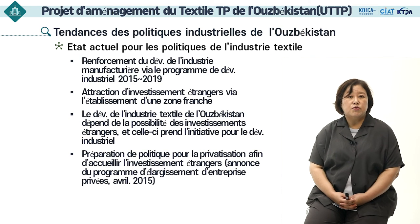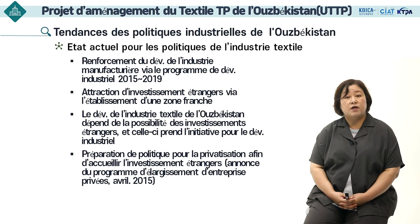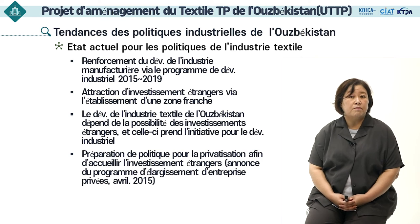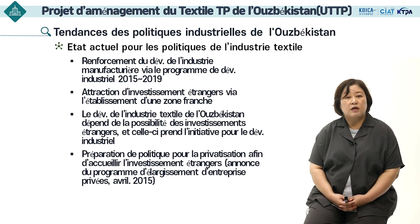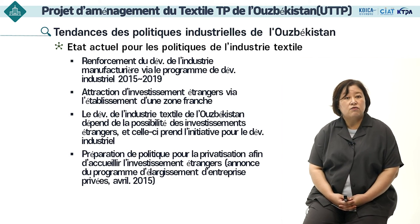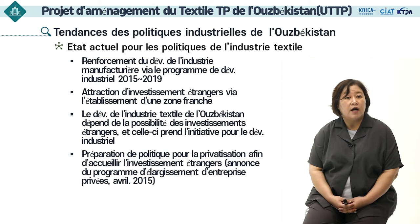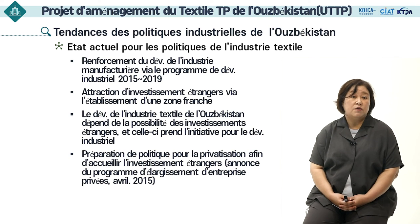L'état actuel de la politique de l'industrie textile est appliqué pour promouvoir le développement de l'industrie manufacturière à travers le programme de développement industriel de 2015 à 2018. Il est soumis à l'accueil d'investissements étrangers par l'établissement d'une zone économique spéciale. Dans le développement de l'industrie textile en Ouzbékistan, l'investissement des multinationales joue un rôle très important. Les politiques de privatisation sont également poursuivies pour attirer ces investissements étrangers.